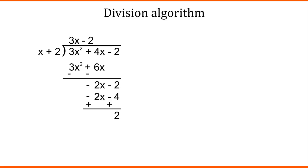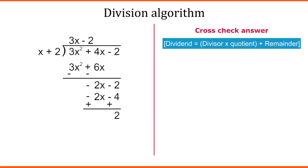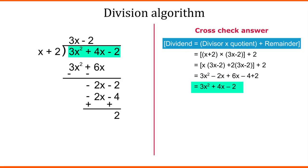Now, friends, we can see here that we have taken one example of a solved division algorithm for polynomials. Now, how can you verify this? You can verify this by using division algorithm whether we have done this correctly or not. So, we know that dividend equals divisor multiplied by quotient plus remainder. And we can see here that we have got our dividend. This shows that our answer is correct.